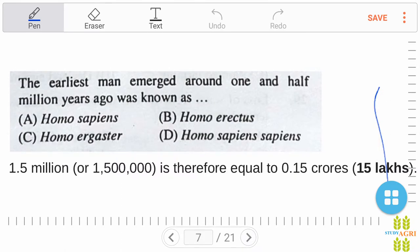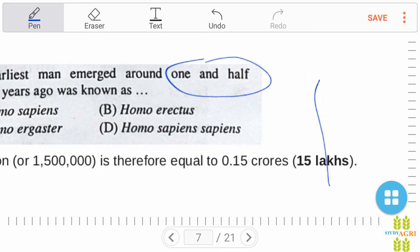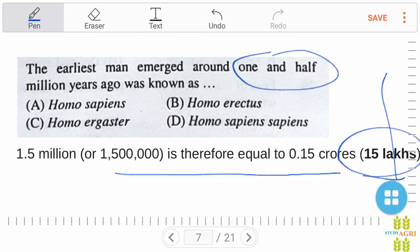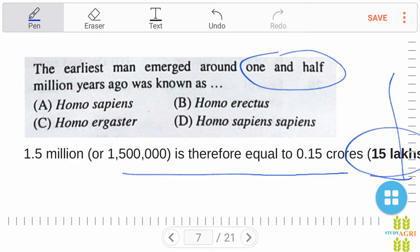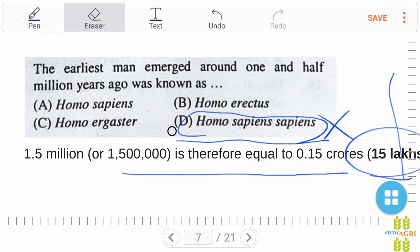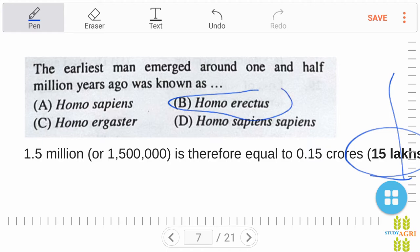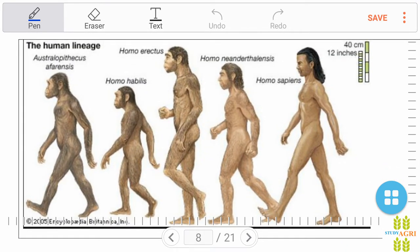Next question: the earliest man emerged around one and a half million years ago, approximately 15 lakhs years ago, was known as Homo sapiens sapiens? Today's human being is known as Homo sapiens sapiens, so D is not the right answer. Our right answer is option B, Homo erectus. Let's see the chart of our human growth. Homo sapiens sapiens means this one, Homo neanderthalis means before Homo sapiens, and before Homo neanderthalis, Homo erectus almost 15 lakhs years ago. First, Australopithecus and Homo habilis.